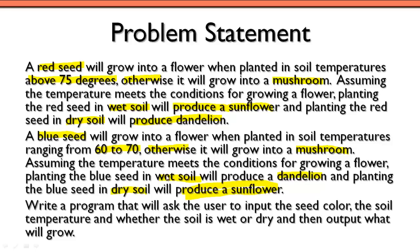So what do we have to do? We've got to write a program that will ask the user to input the seed color, then input the soil temperature, and finally input whether the soil is wet or dry — basically the soil moisture. Then it needs to output what will grow: a mushroom, a dandelion, or a sunflower. Those are the three choices. So we've read and analyzed the problem statement, we know our inputs and conditions, so let's go over to Eclipse and start writing some pseudocode.